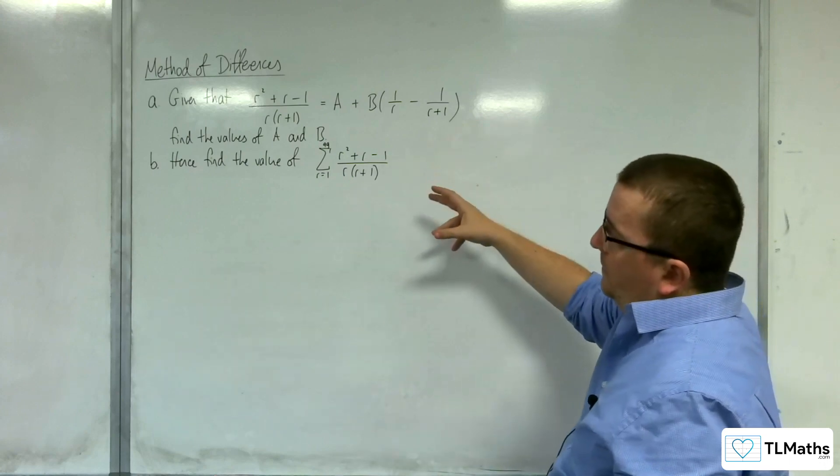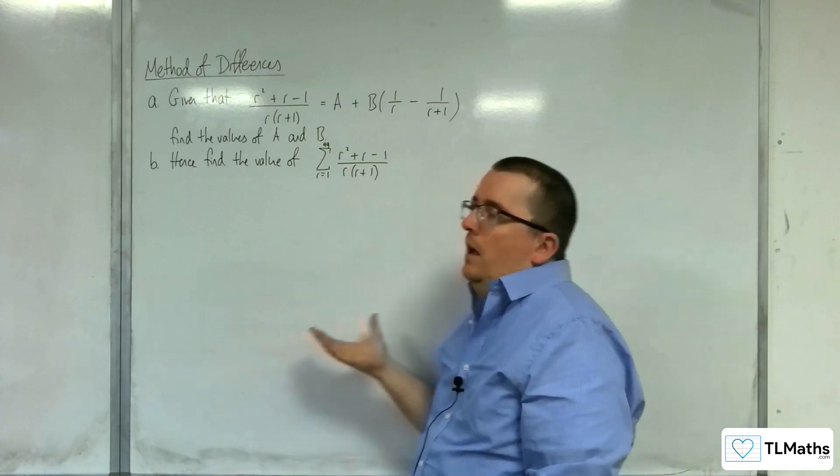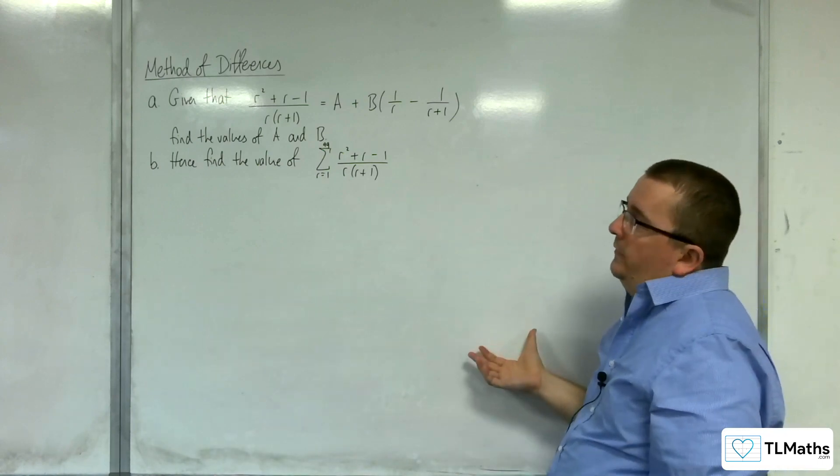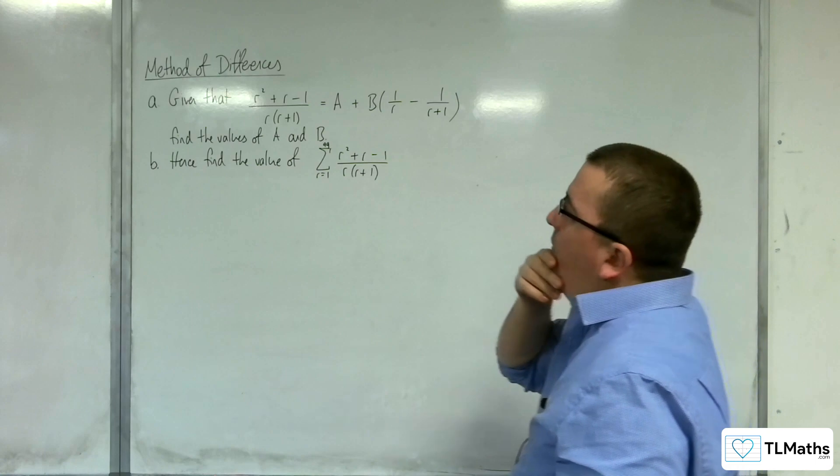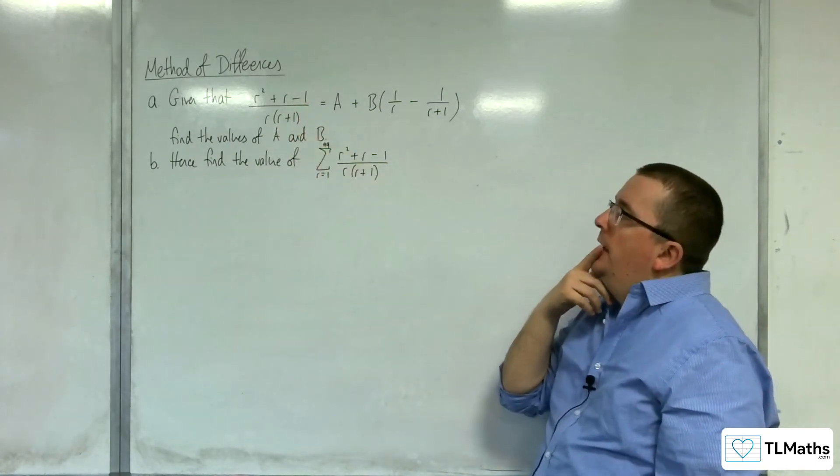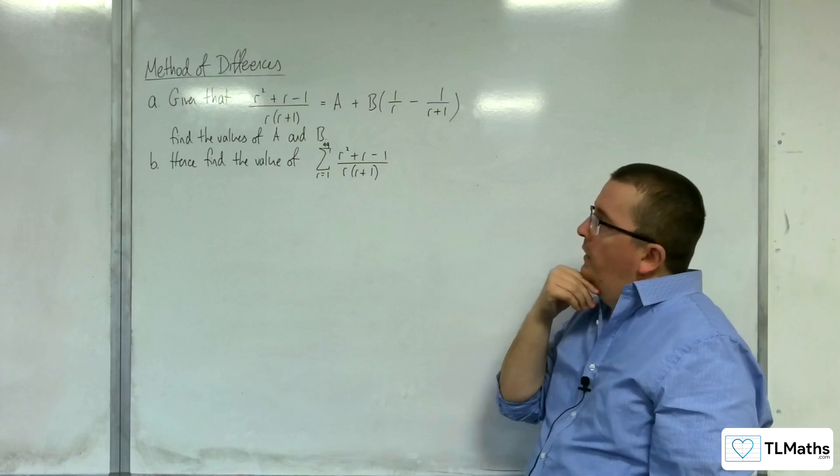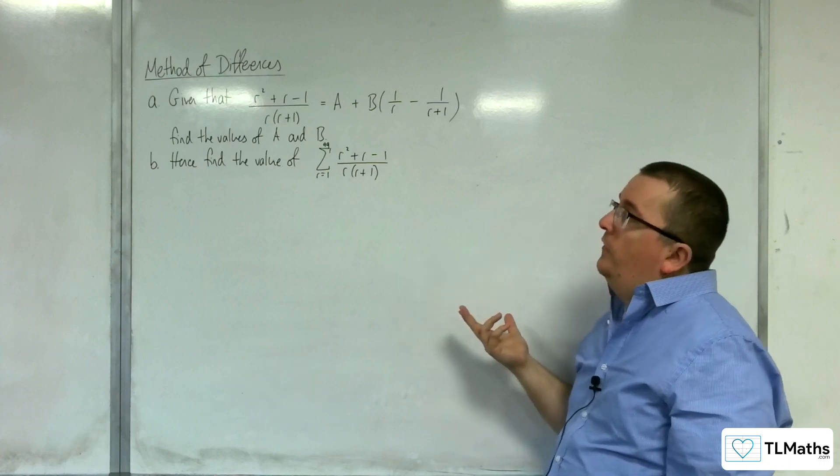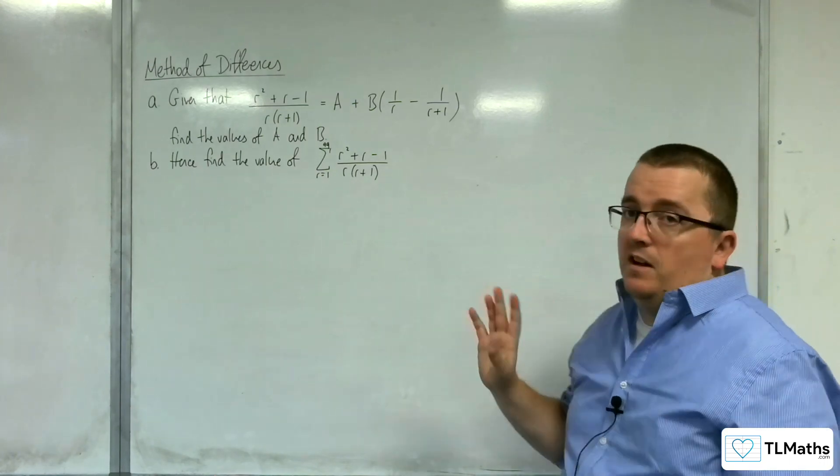So let's deal with part a first. Now, I can think of a couple of different ways of doing this. You could use some polynomial division here and then partial fractions. I think it would be a lot easier if we just multiplied both sides by r(r plus 1).